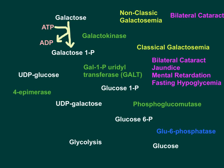Galactose-1-phosphate undergoes a reaction catalyzed by galactose-1-phosphate uridyl transferase, the GALT enzyme. In this process, galactose-1-phosphate combines with UDP-glucose: the UDP from UDP-glucose attaches to galactose to form UDP-galactose, and glucose takes the phosphate from galactose-1-phosphate to become glucose-1-phosphate.